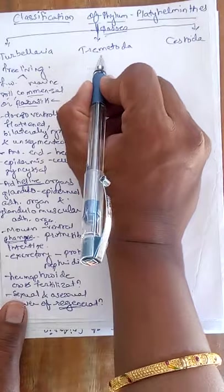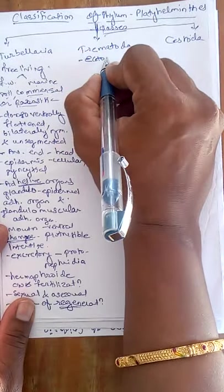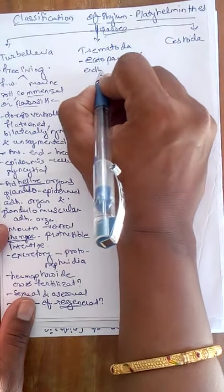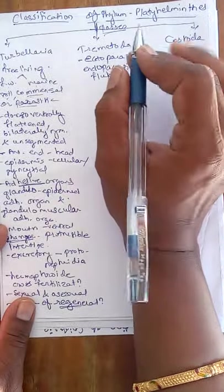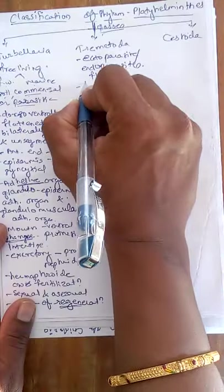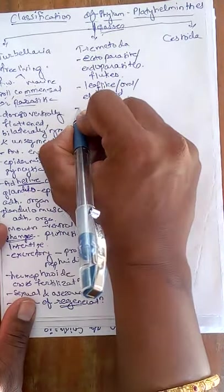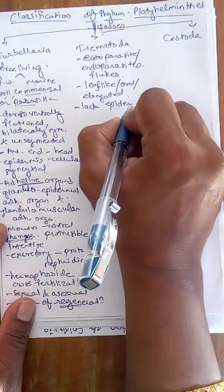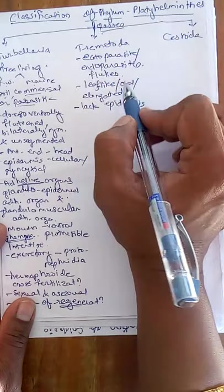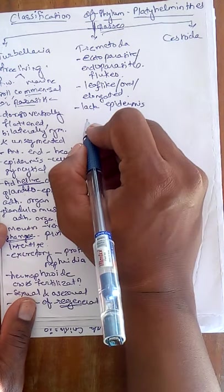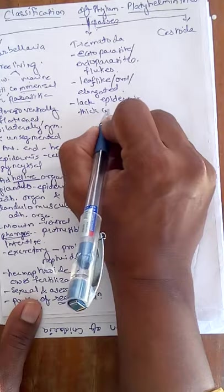The second class is Trematoda. These individuals are not free-living; they act as either ectoparasites or endoparasites and are commonly called flukes. Liver fluke is an example. The body may be leaf-like, oval, or elongated. The animals lack epidermis, but a thick cuticle is present instead.